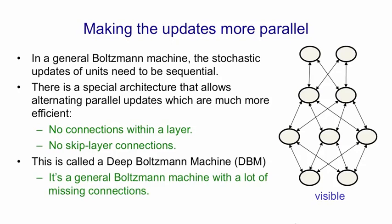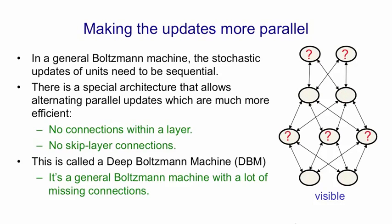In this special architecture there's something nice we can do. We can update the states of, for example, the first hidden layer and the third hidden layer given the current states of the visible units and the second hidden layer, and then update the states of the visible units and the second hidden layer, and go back and forth like this. This lets us update half the states of all the units in parallel, and that'll be a correct update.